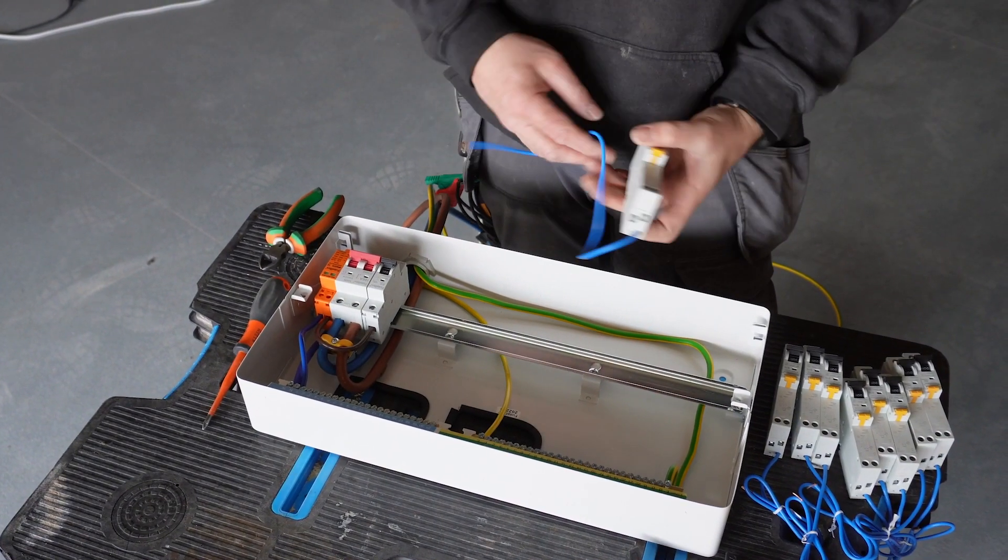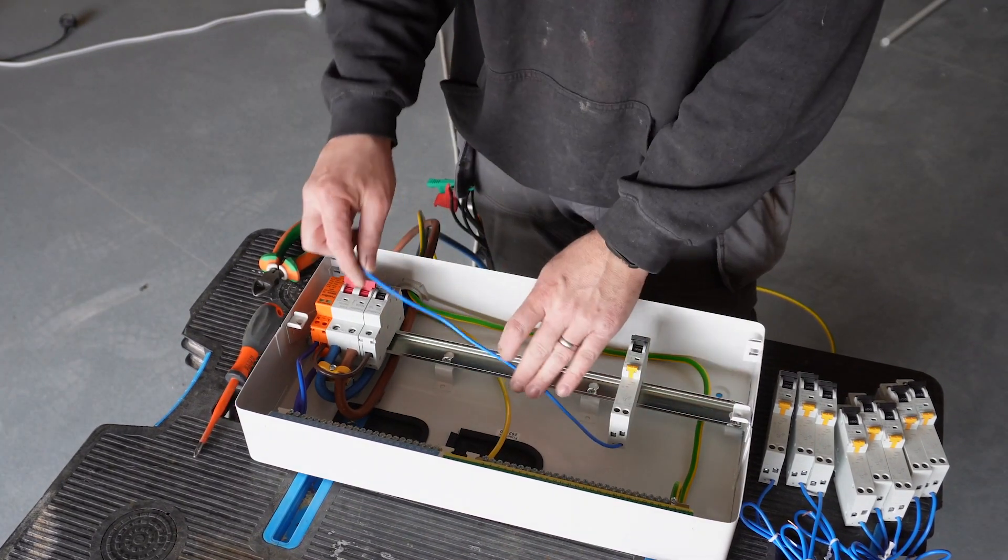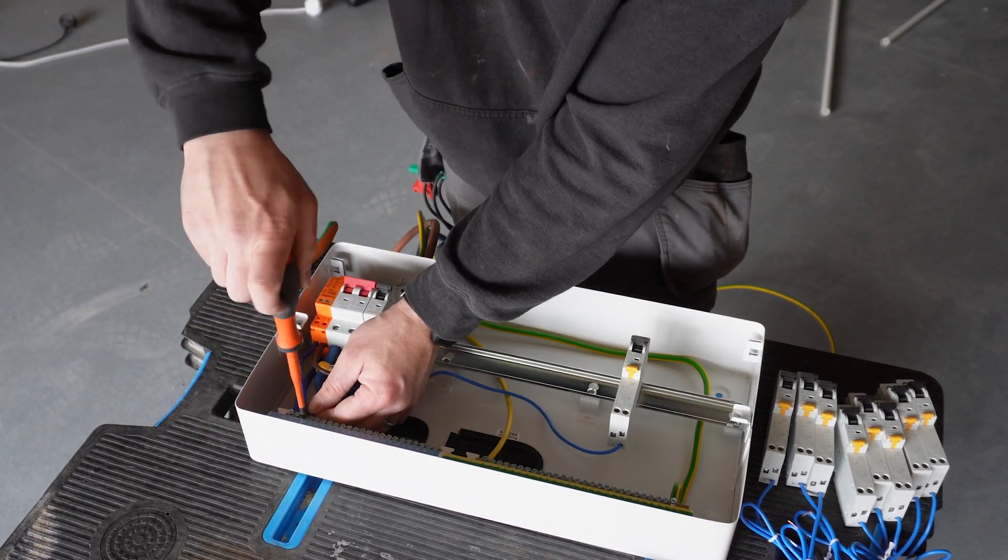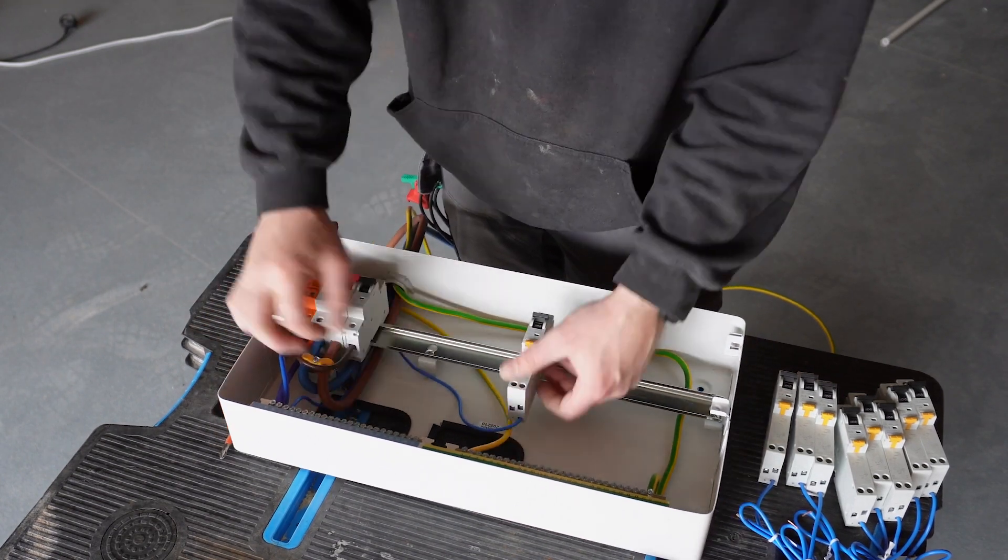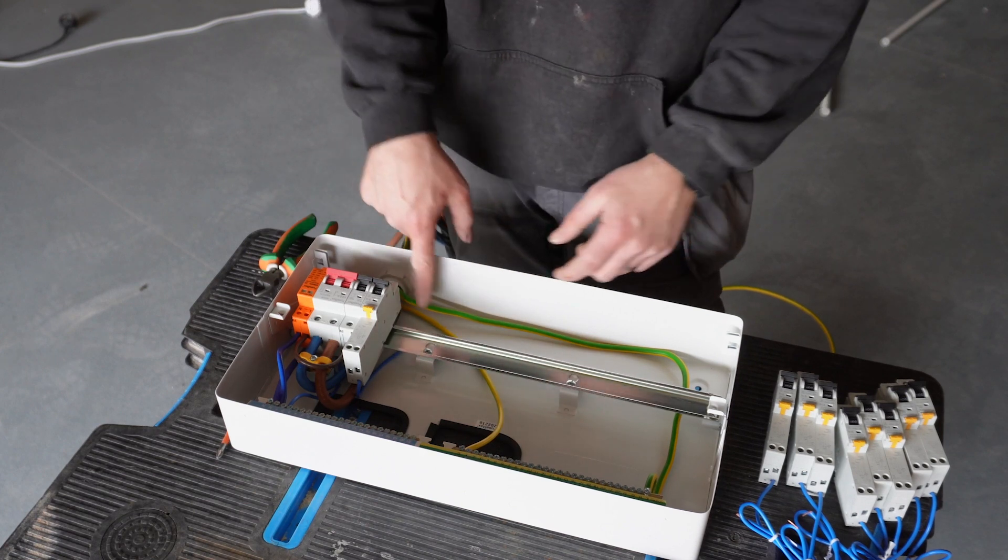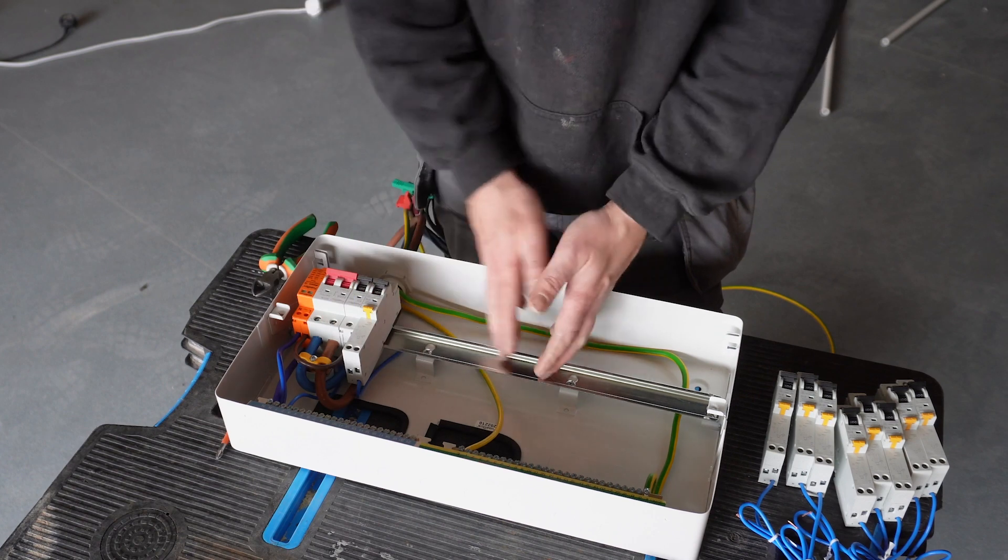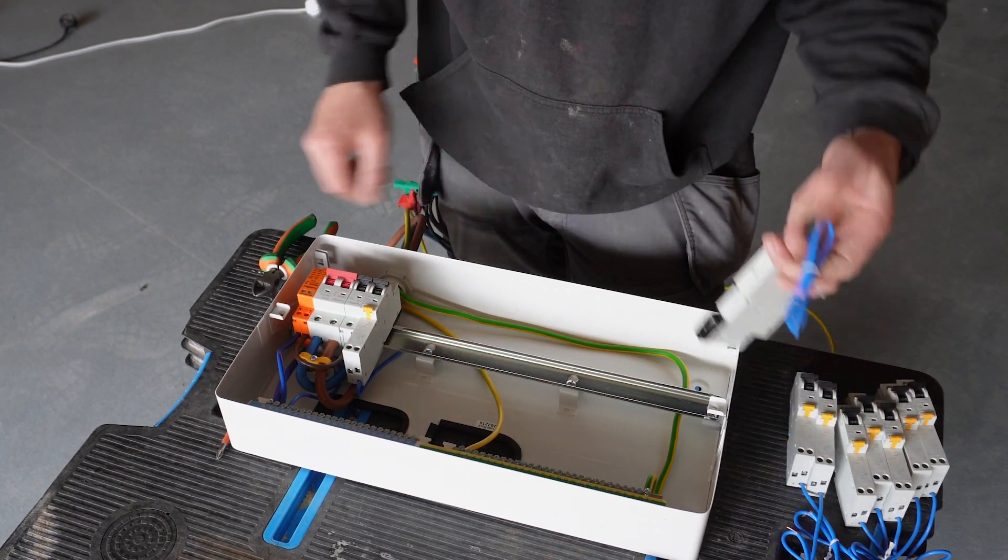What I normally do is start with your highest loads all the way working that way. Stick it in there. As you're pushing it along, you're tucking it behind all the DIN rails. You'll see how it loses all that. You won't see any of that at the bottom, and then you just basically work your way along.